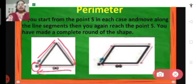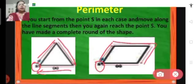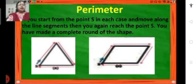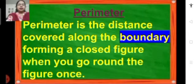Then the measurement of the three sides of this triangle gives the perimeter of the triangle. Similarly, if we take this quadrilateral and start from point S again, and if we want to know the perimeter, we will go around the figure like this and come back to S. Then we get the perimeter of this figure. So perimeter is the distance covered along the boundary of a closed figure when we go around the figure once.